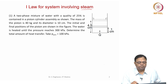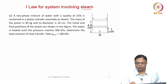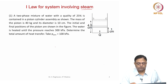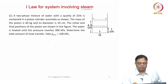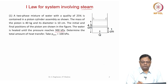The first problem: a two-phase mixture of water with a quality of 0.25 is contained in a piston-cylinder assembly. The mass of the piston is 40 kg and its diameter is 10 centimeters. The initial and final positions of the piston are shown in the figure — initially at a height of 1 centimeter, finally it hits the stops at a height of 4.5 centimeters. The water is heated until the pressure reaches 300 kilopascals.